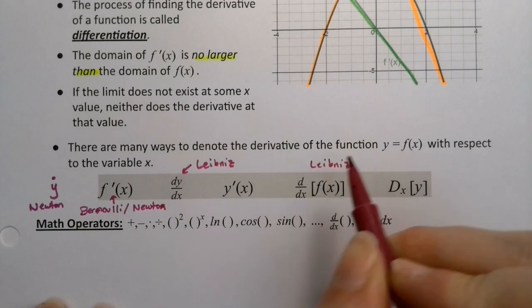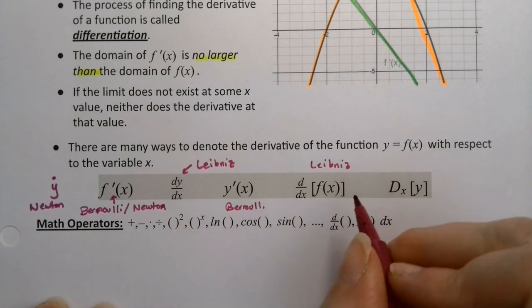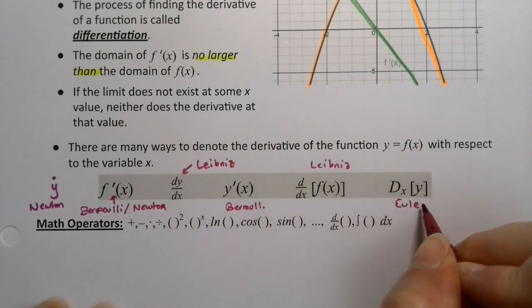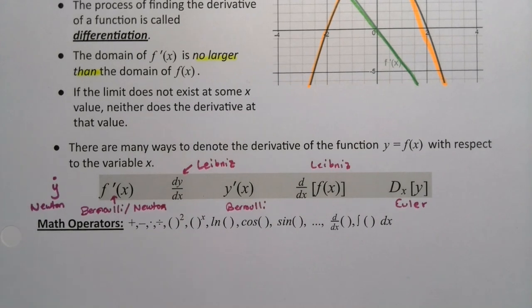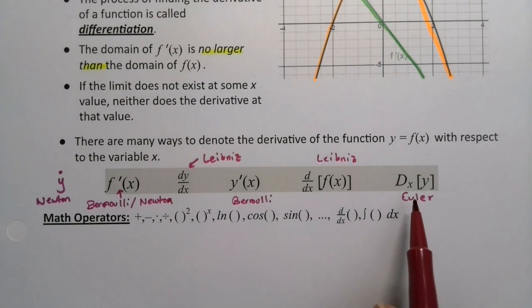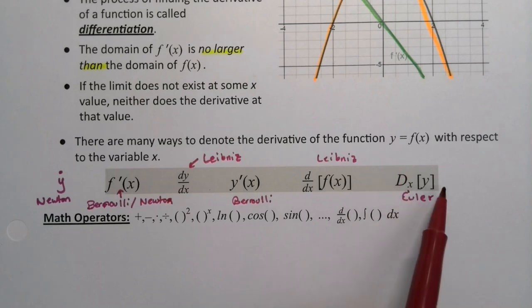This is also Leibniz notation. This is actually Euler notation. Euler was Swiss-German, I can't remember, but he thought of this notation which actually becomes very useful in differential equations. So that's actually a notation, it's saying take the derivative with respect to x of this function y. So that's another useful notation, D_x[y].